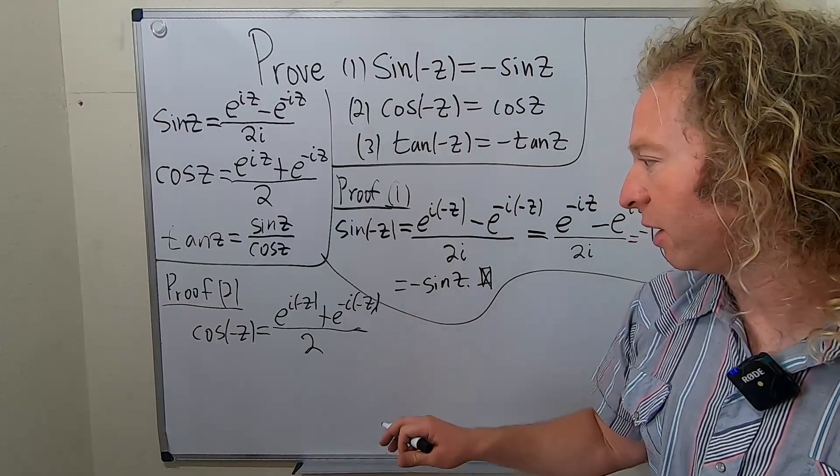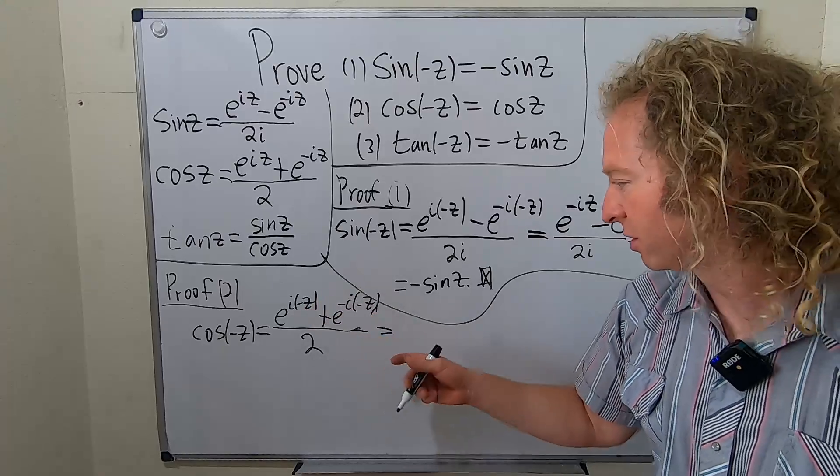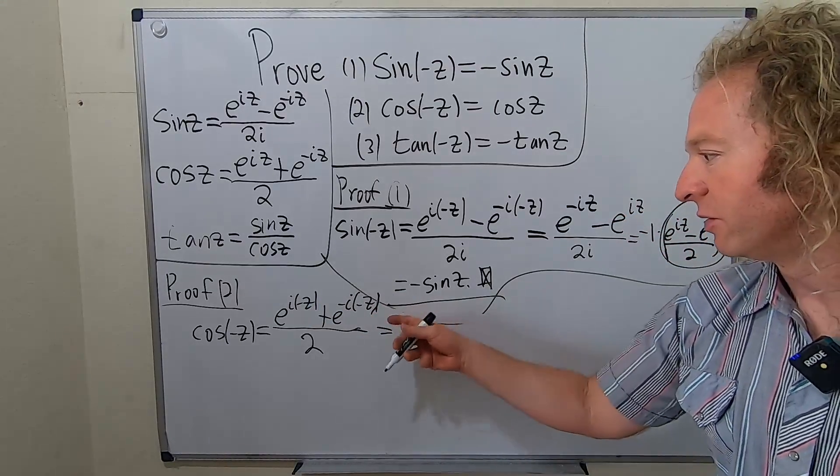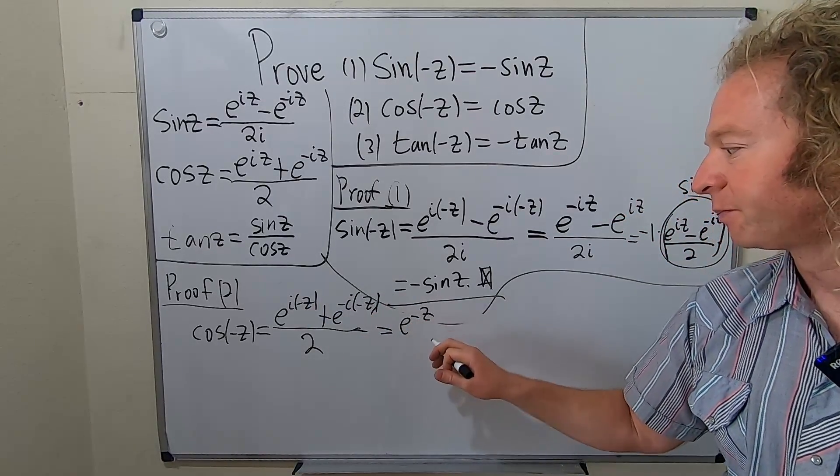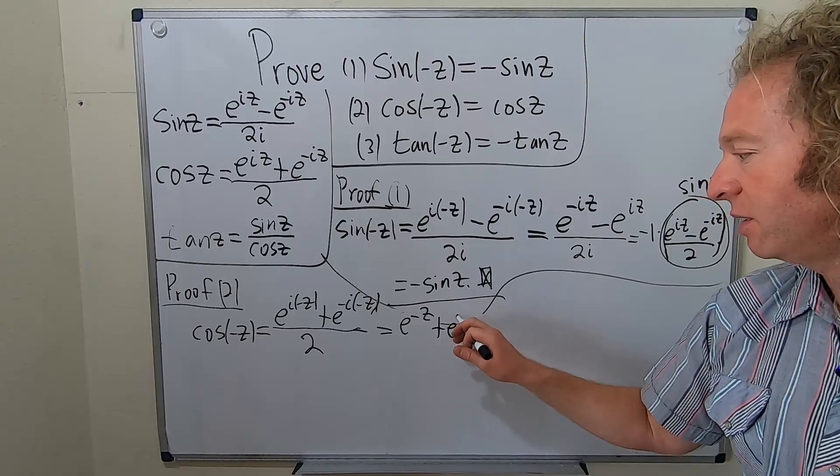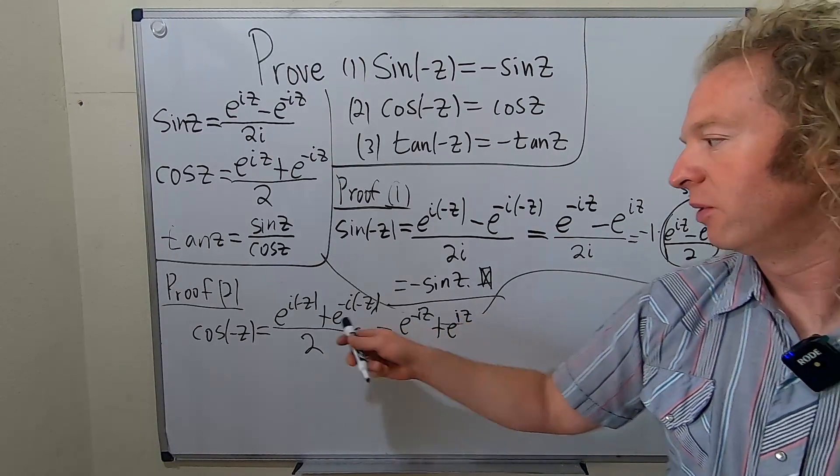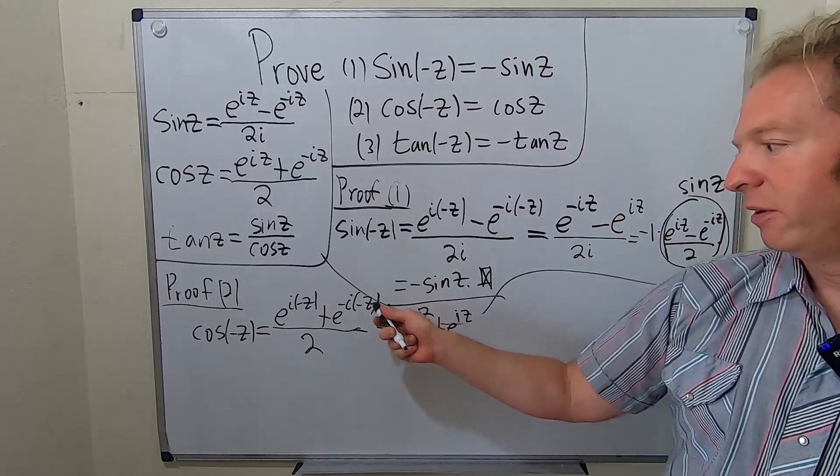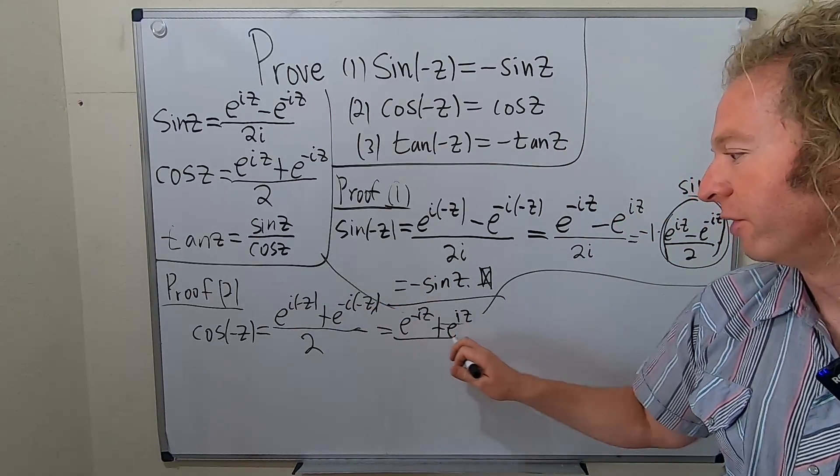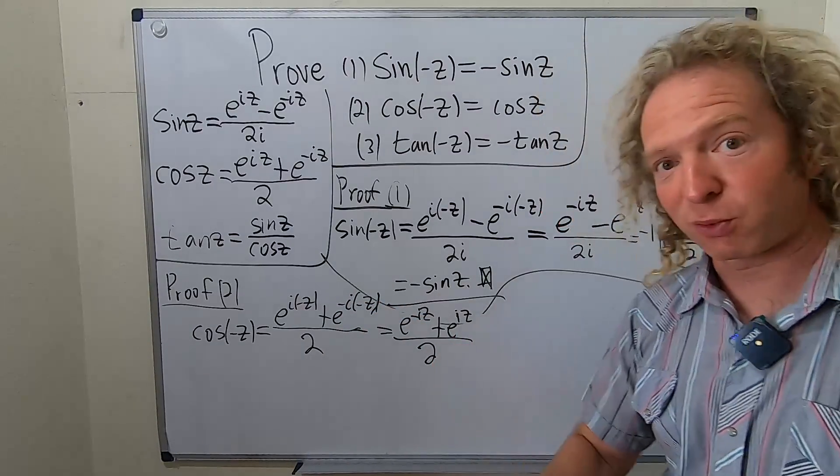Let's just distribute this a little bit, make it look better. So this is e to the negative iz plus e to the - oh, I forgot the i - plus e to the iz, right? So this negative comes here and this becomes positive. And this is all over two. Looks like we're still good.